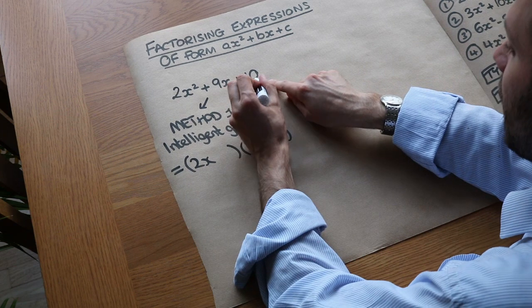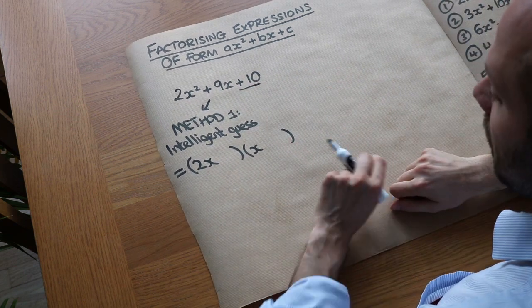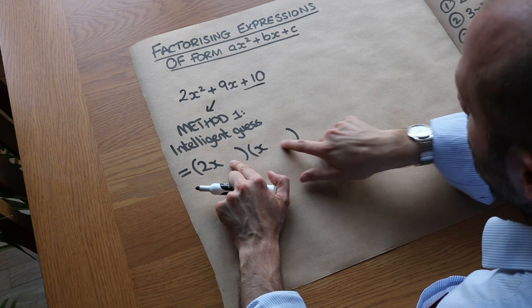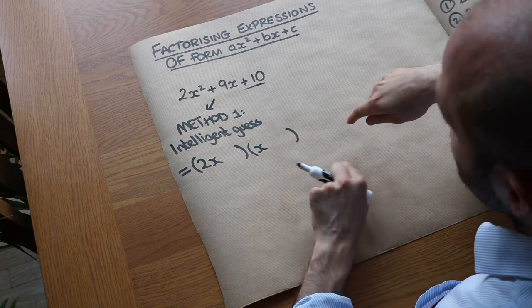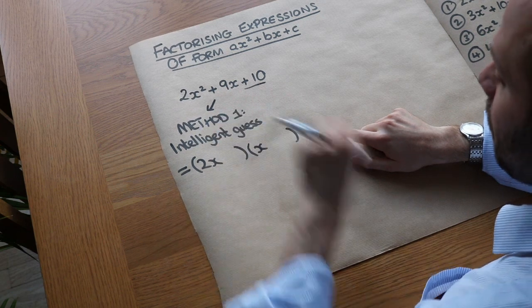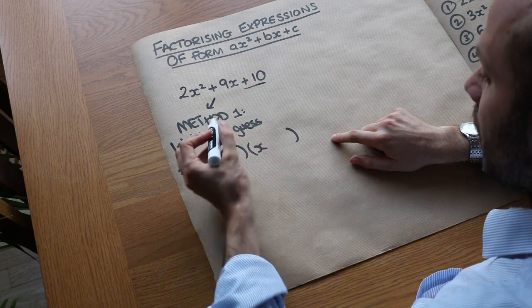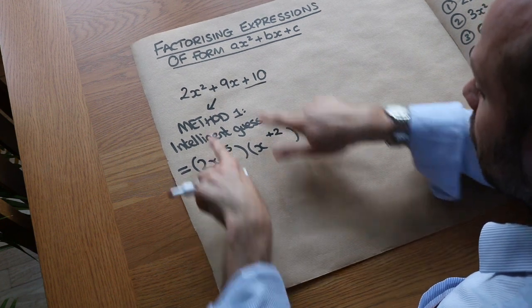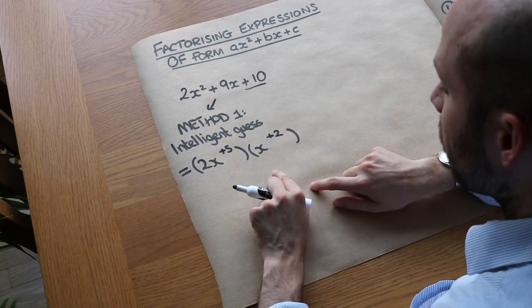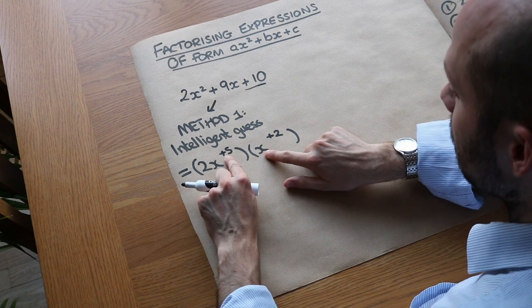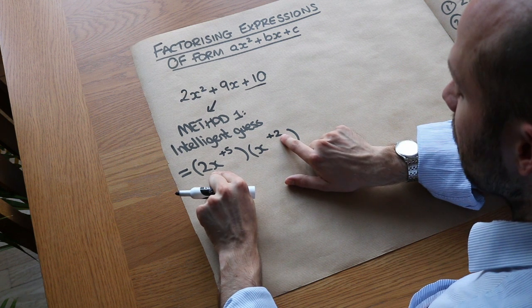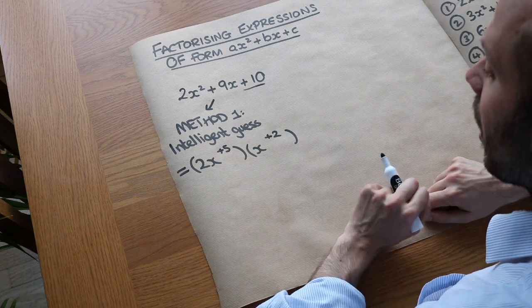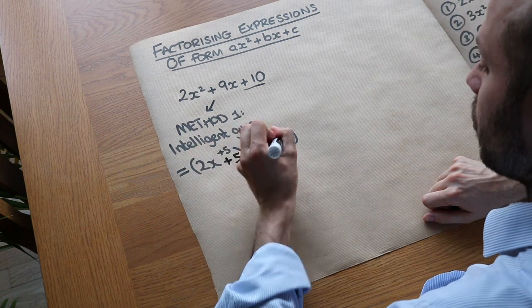We also need to get that 10. What might multiply to give 10? There are different possibilities: it could be plus 1 and plus 10, plus 2 and plus 5, or plus 5 and plus 2. We have to make sure that whatever two numbers we choose also gives us the 9X in the expansion. Let's try plus 5 and plus 2 — that gives us the 10 and the 2X squared. The 5 times X gives 5X, and 2X times 2 gives 4X, so 5X plus 4X is 9X. A lucky guess, and it's correct.